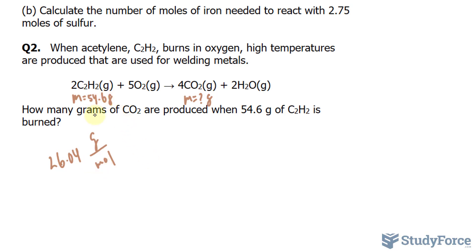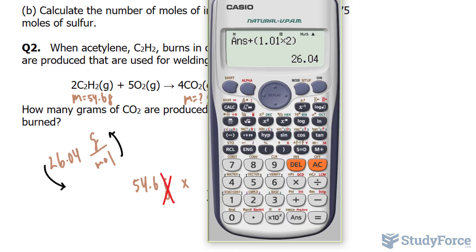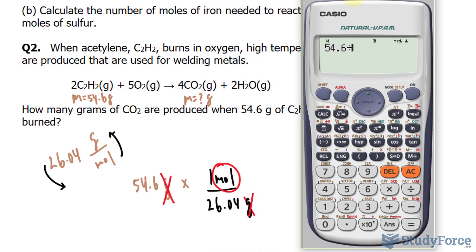Using 54.6 grams, I'll multiply this number to the flipped version of this, where the moles are at the top and grams are at the bottom. So I have 1 mole per every 26.04 grams. This unit and this unit will cancel out, leaving us with the amount of moles. So 54.6 divided by 26.04, and we need this to three significant figures, we get 2.096.